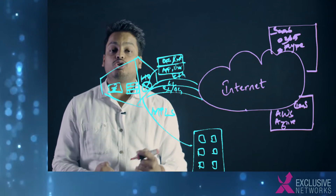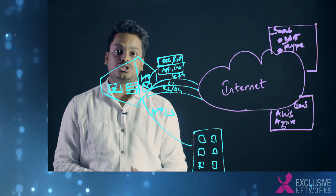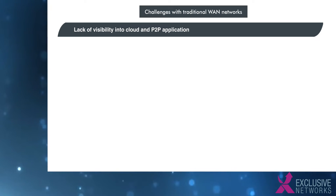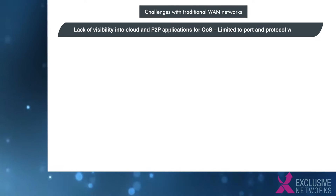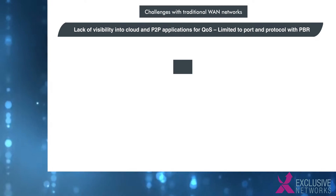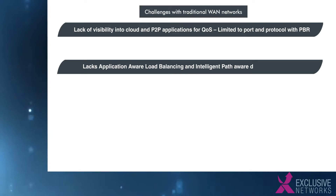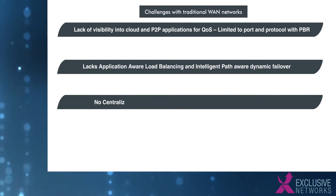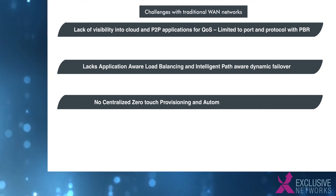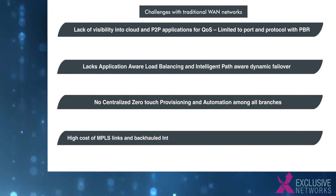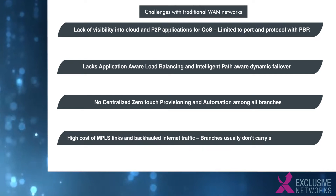Now, these are some of the challenges that software-defined WAN plans to solve. To summarize the challenges with legacy network solutions: there is a lack of visibility into cloud and peer-to-peer applications, which may be required for quality of service. It is not application-aware while load balancing, and there is no intelligent path-aware dynamic failover. It also lacks centralized zero-touch provisioning and automation. We also have the high cost of MPLS links and backhauled internet traffic.